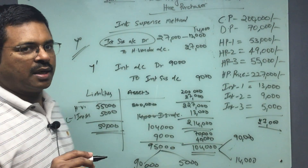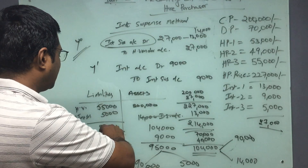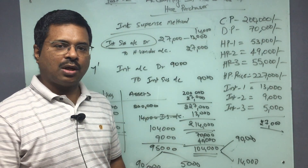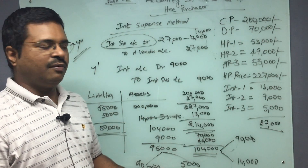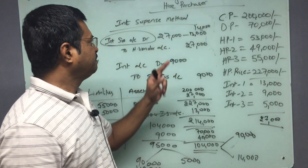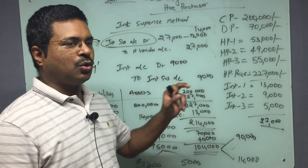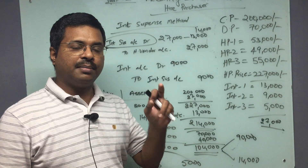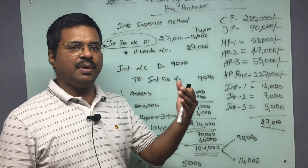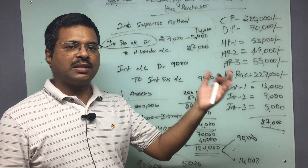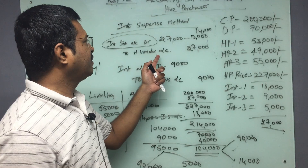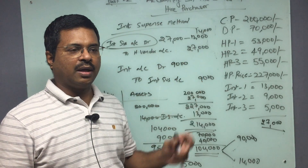In the third year, I make the final payment of 55,000 — comprising 50,000 principal and 5,000 interest — which is the third hire purchase installment, and the vendor account is cleared. The only difference between the cash price method and the interest suspense method is that under interest suspense, the total interest is credited to hire vendor at the very beginning, and then the interest suspense account is adjusted periodically without routing through hire vendor again.